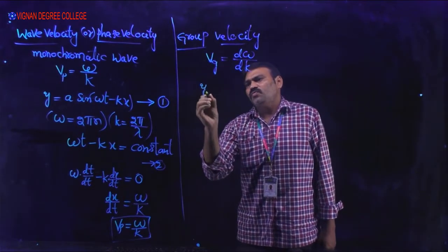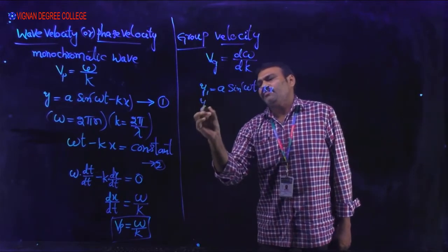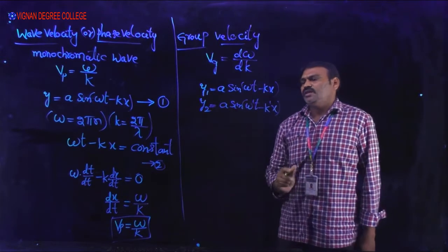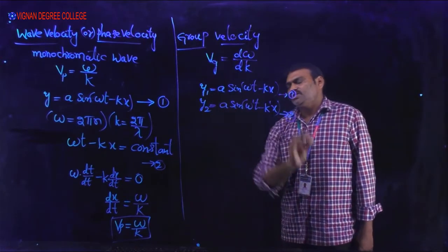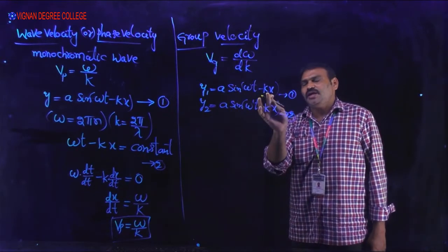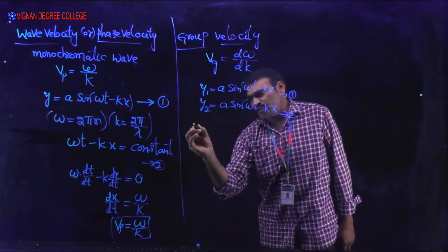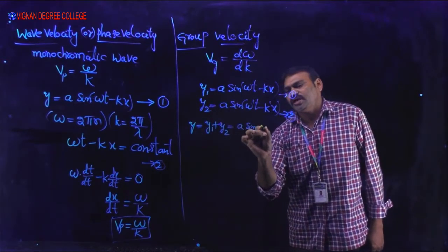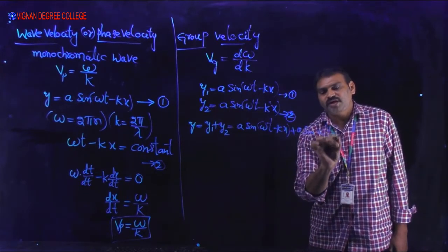Suppose there are two waves: y₁ = A sin(ωt − kx) and y₂ = A sin(ω′t − k′x). In these two equations, A is the amplitude (same in both). However, omega and omega′ are slightly different, and k and k′ (the propagation constants) are also slightly different. When these two waves combine, the resultant wave is y = y₁ + y₂ = A sin(ωt − kx) + A sin(ω′t − k′x).